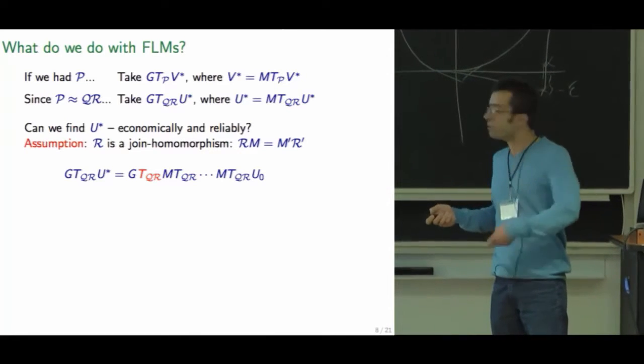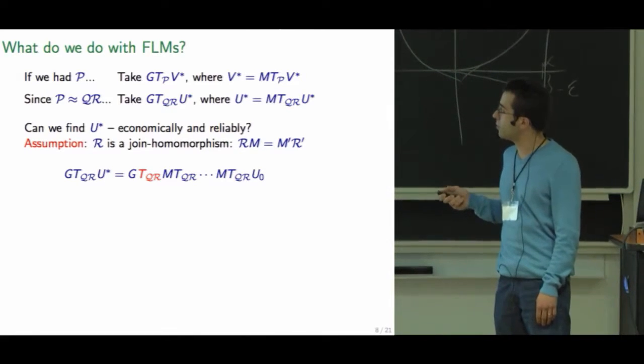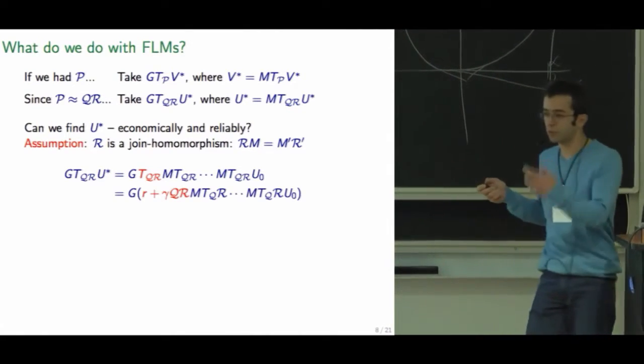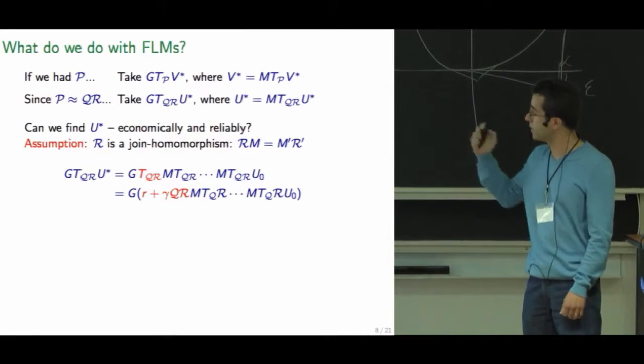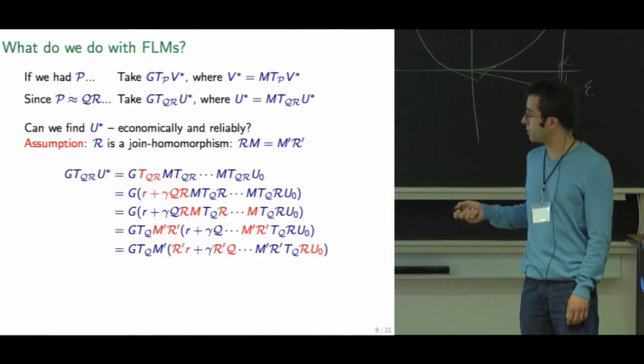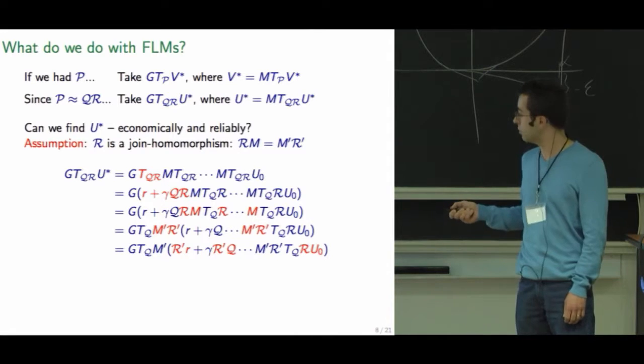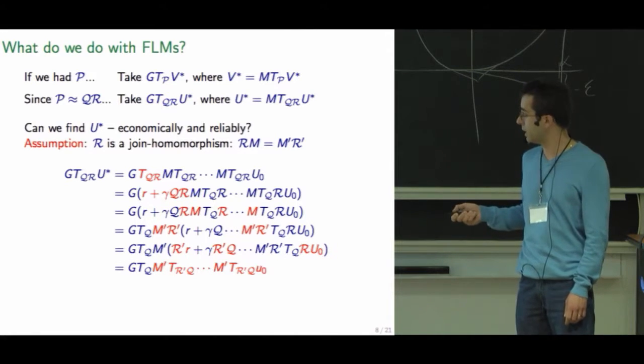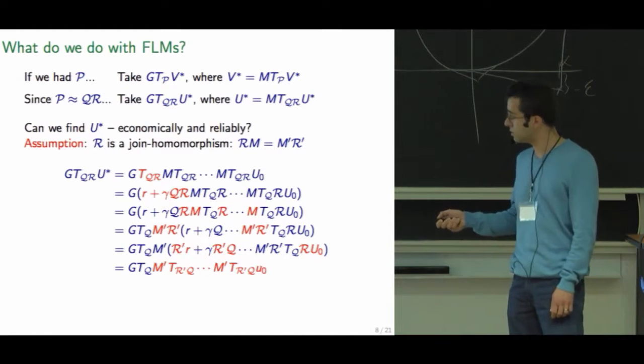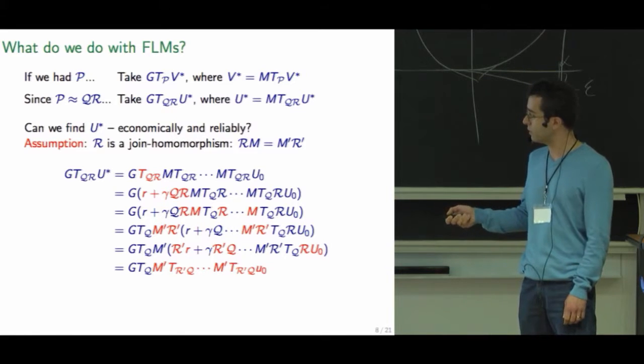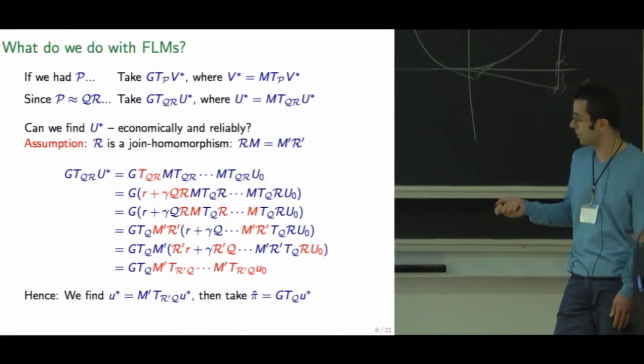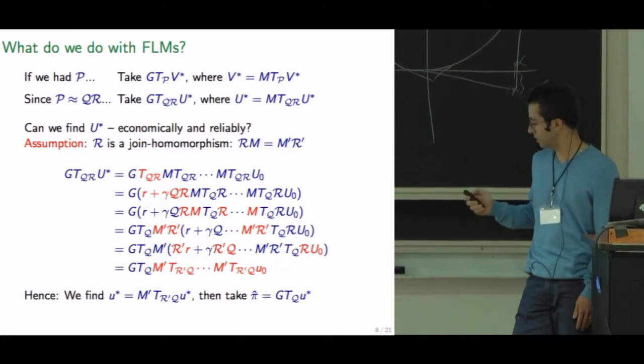And we could try to find u star by applying this MT_Q operator an infinite number of times from some initial guess u_0. I'm sort of sweeping under the rug whether we can do that, but let's try. We expand some definitions, realize that R and M occur together, swap things around, and now we can compress our rewards and compress the outputs of Q. So this is essentially a low dimension operator and we can just apply it to a compressed initial guess. This is easy to compute. And then at the very end, we just reconstruct and take the greedy. And this is what we propose to do.